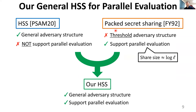Technically, we use the notion of packed secret sharing. The previous scheme can tolerate a general adversary structure but does not support parallel evaluation. On the other hand, the share size of packed secret sharing is only logarithmic in the number of evaluations, but it can only tolerate a threshold adversary structure. In this work, we propose a novel way to combine these two schemes. As a result, we obtain a homomorphic secret sharing which not only tolerates general adversary structures but also achieves share size logarithmic in the number of evaluations.